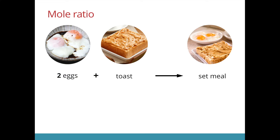Let me show you an example. In this case, we have the situation where 2 eggs and a toast would make a set. So looking at this equation, we say that the ratio of eggs to set is 2 is to 1, while the ratio of toast to set is 1 is to 1. So what it means by a ratio is represented by the number in front of that substance itself.